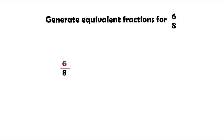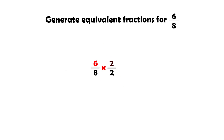Now let's use this method to generate equivalent fractions for the fraction six eighths. We can multiply both the numerator and denominator by two — in other words, six eighths times two halves. Six times two equals twelve, and eight times two equals sixteen. And we have the fraction twelve sixteenths, which is equivalent to six eighths.